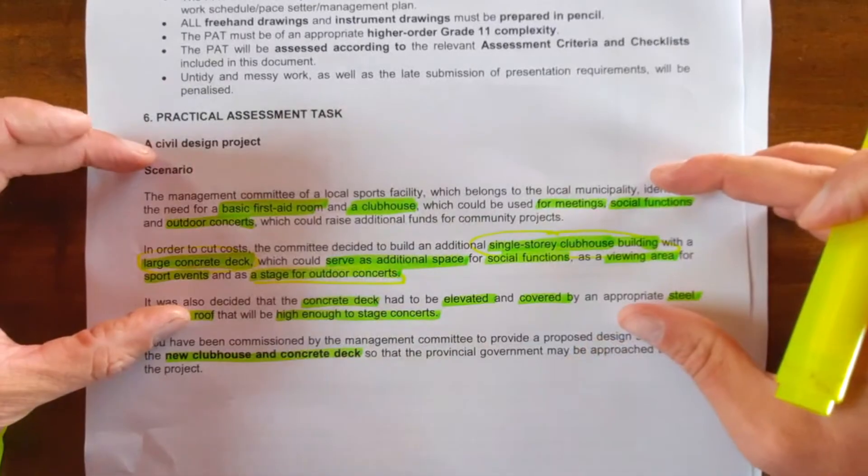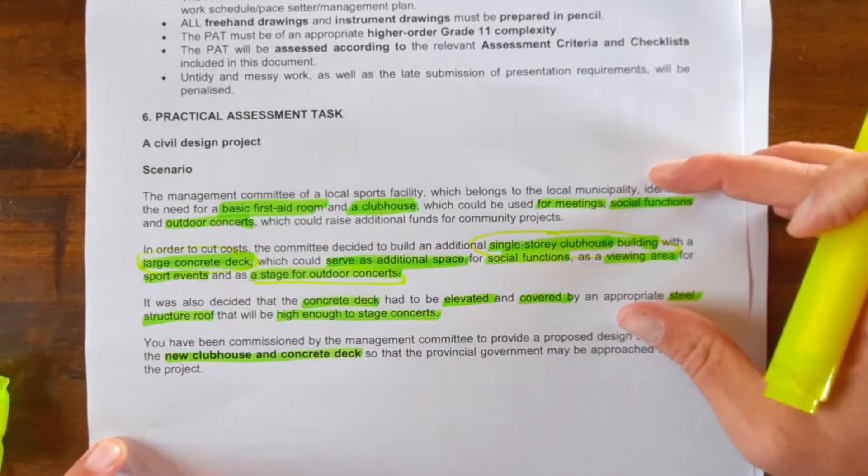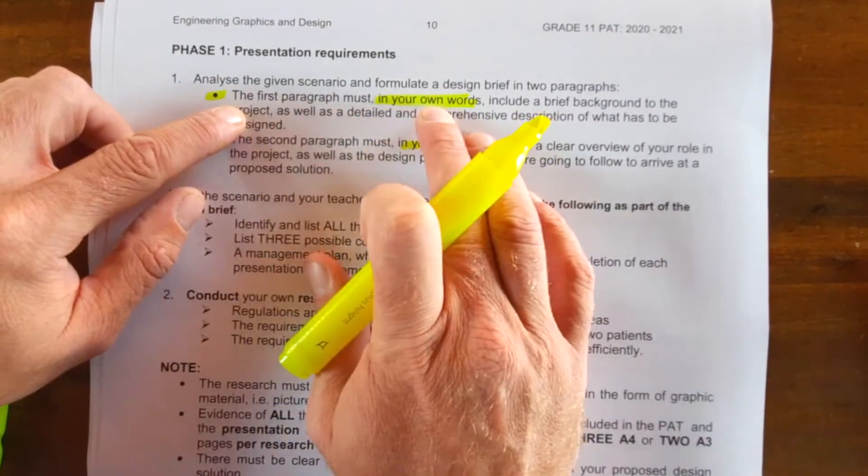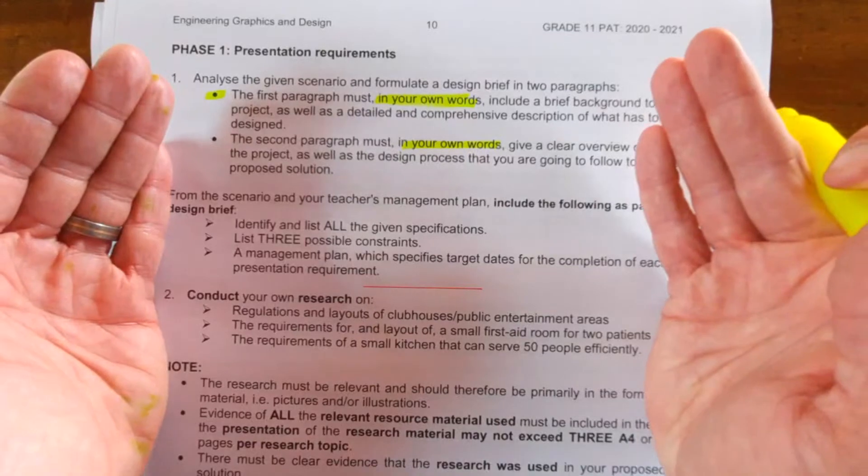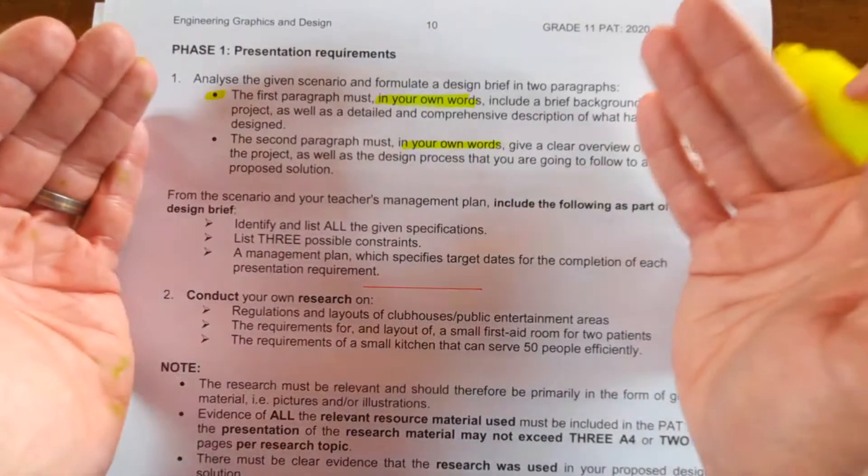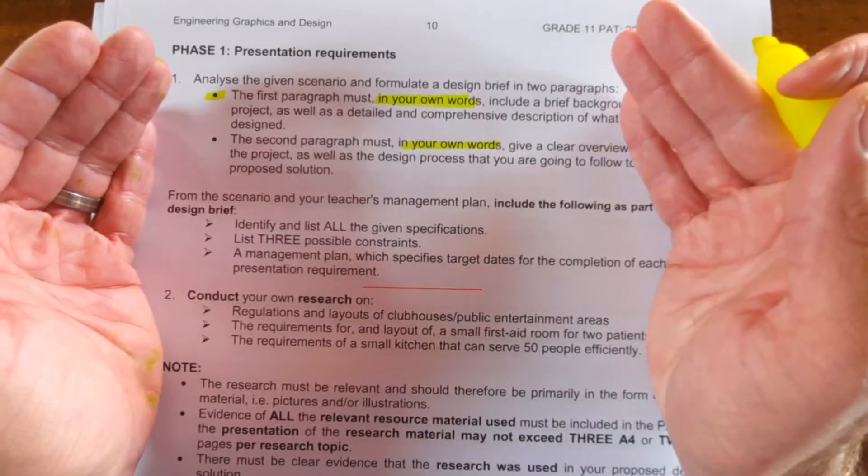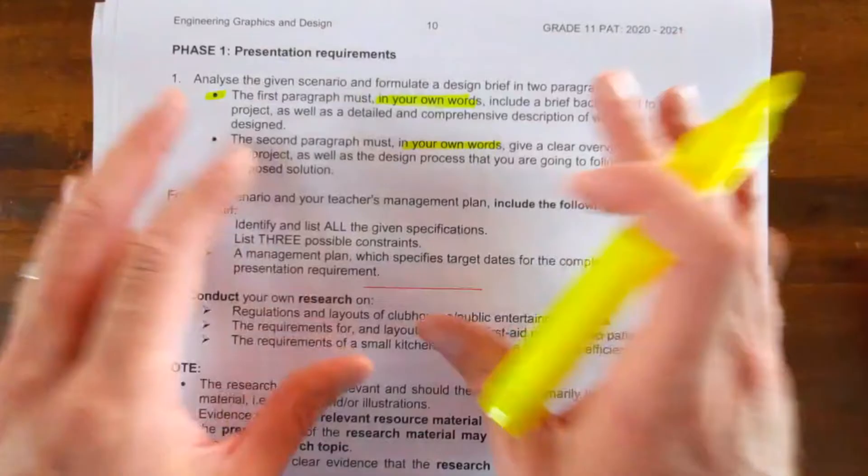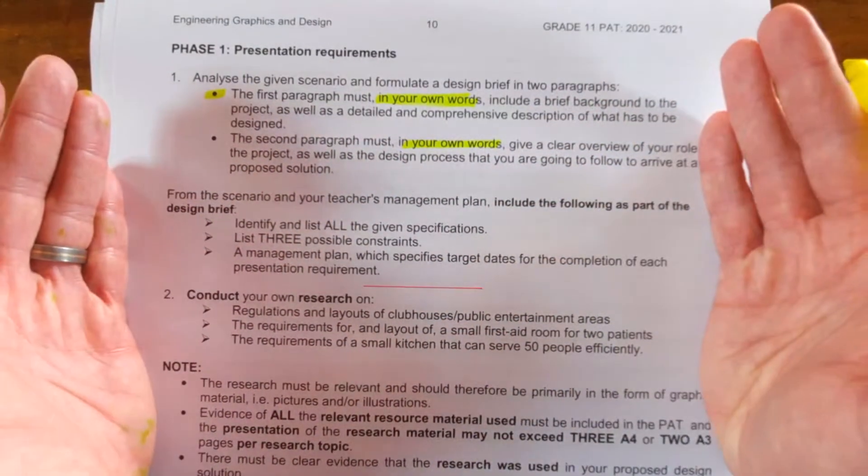So if I now need to frame your first requirements, which is your introduction paragraph, you're going to make sure that your first paragraph is in your own words, basically saying something like: I'm going to design a new clubhouse with a concrete deck for a local municipality which can be used for meeting, social functions, and outdoor concerts.